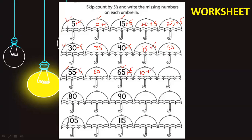Sixty-five plus five gives seventy. To make the next term, we add five to seventy — that gives seventy-five. Seventy-five plus five gives eighty — already written. Eighty plus five gives the missing number: eighty-five.